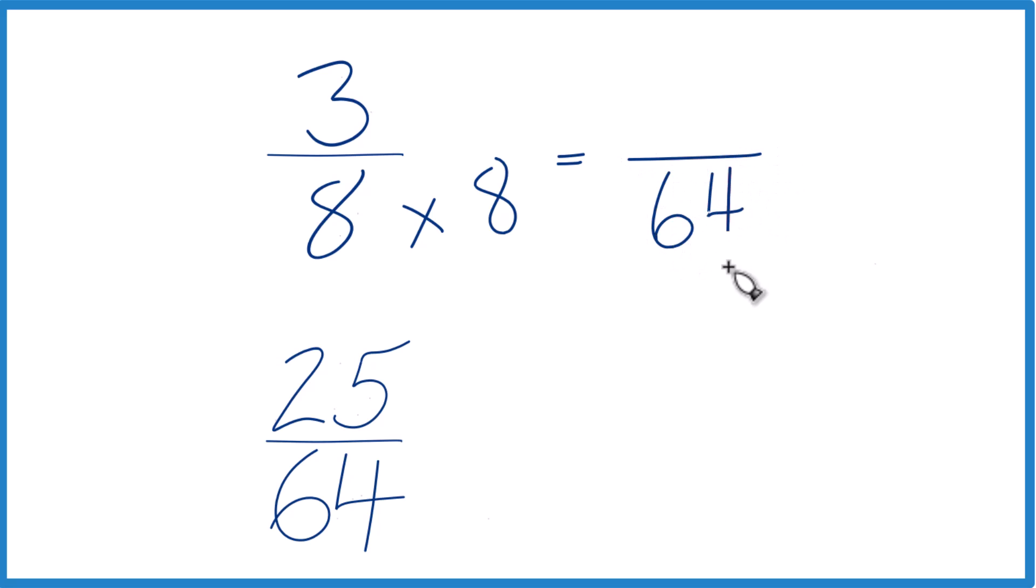And down on the bottom, I already have 64, so I can just move that, keep that the same, 25/64.